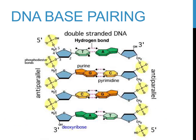The four bases of DNA pair in a particular way. G, guanine, always pairs with C, cytosine, and A, adenine, always pairs with T, thymine. This complementary base pairing allows DNA to be copied quite easily and reduces the chance of mistakes being made in the DNA code when DNA is replicated.